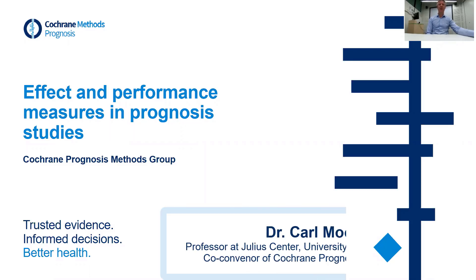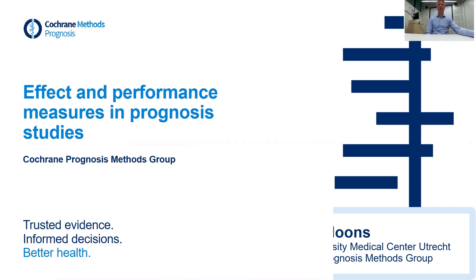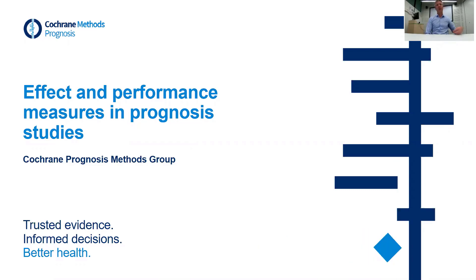My name is Karel Moens from the Julius Center of the University of Utrecht in the Netherlands, and also co-convener of the Cochrane Prognosis Methods Group. Welcome to this short introduction to effect and performance measures that are used in prognosis studies.